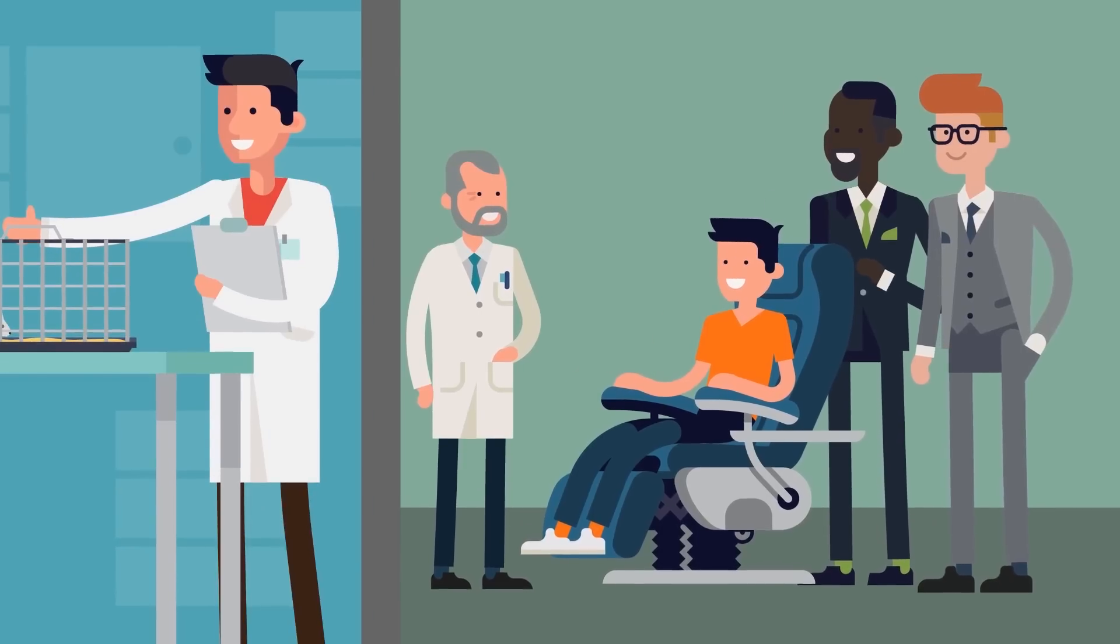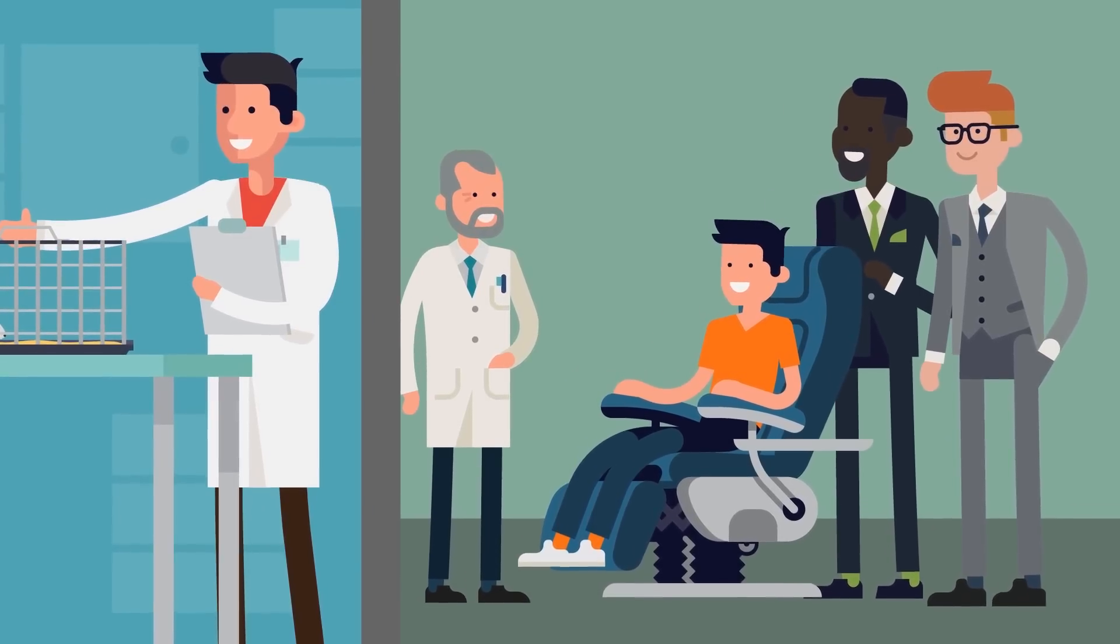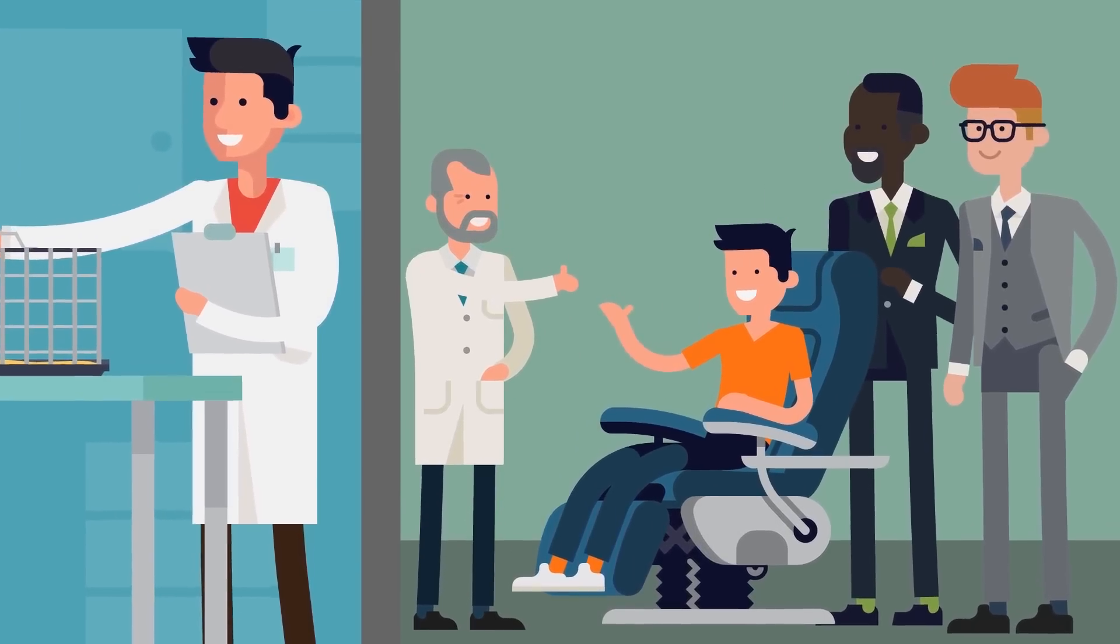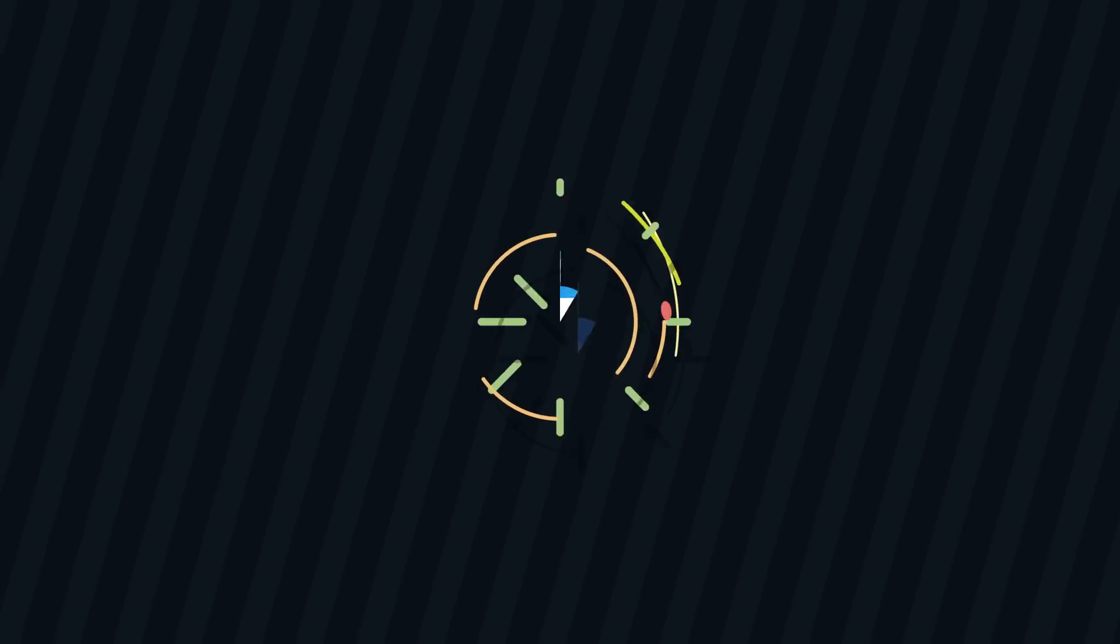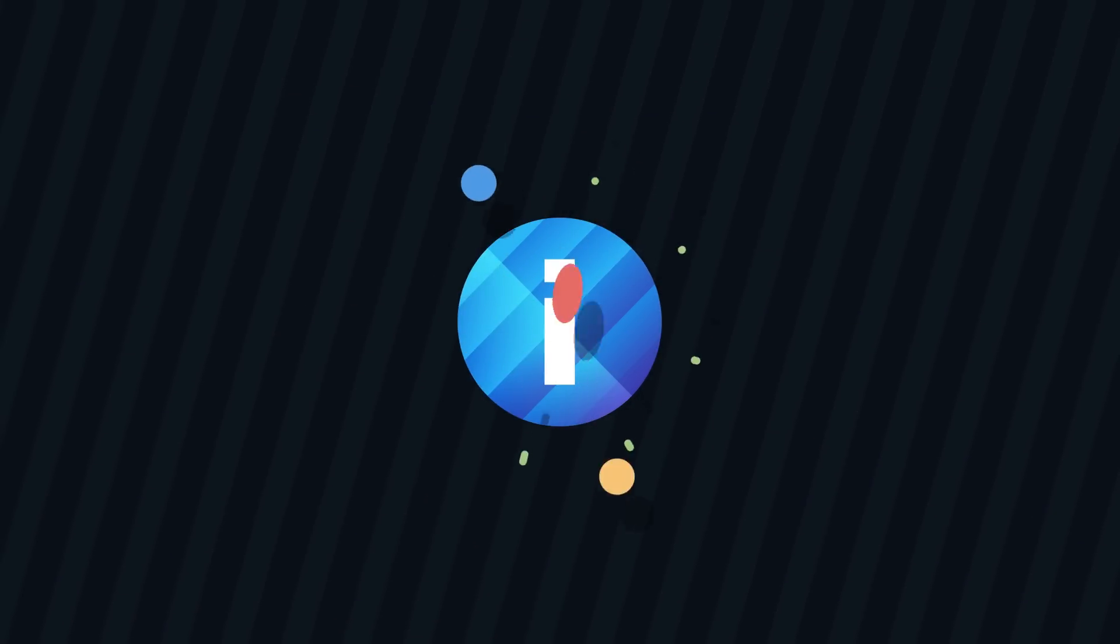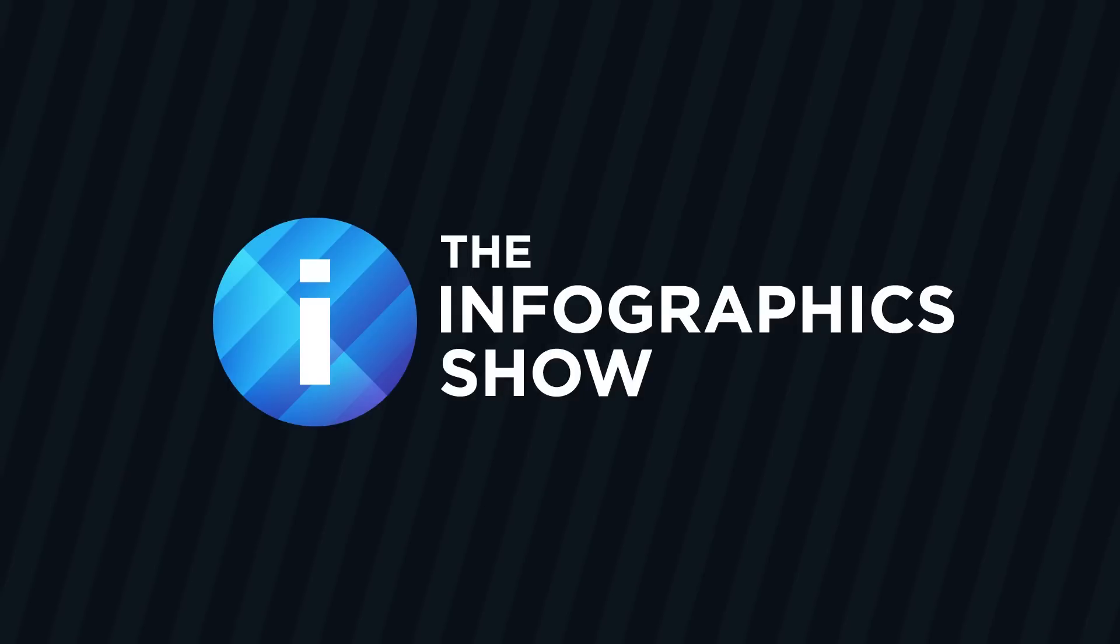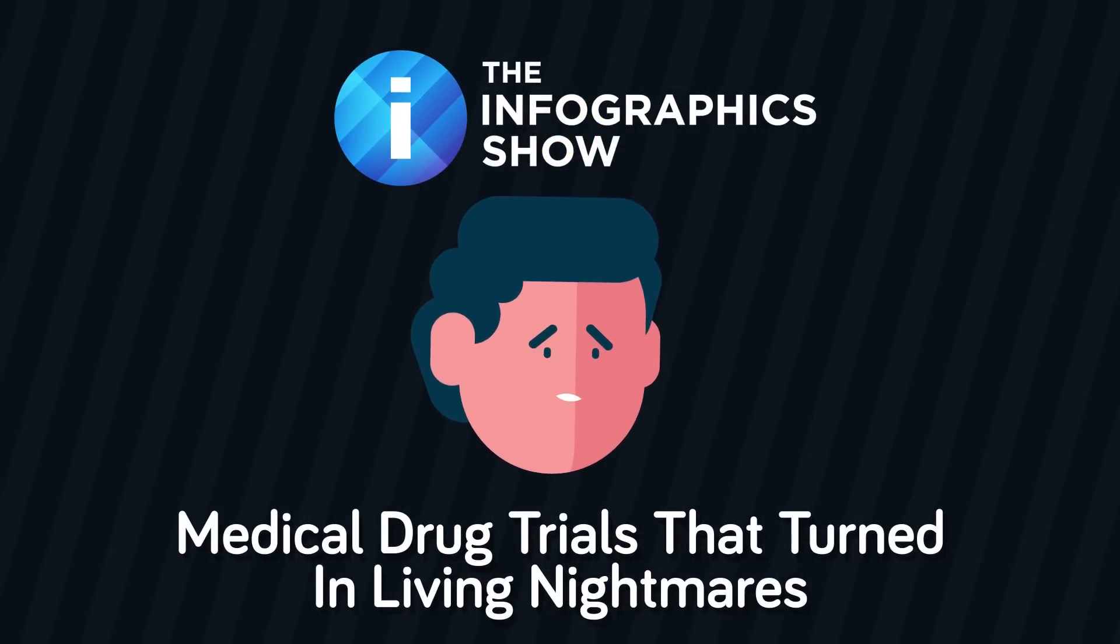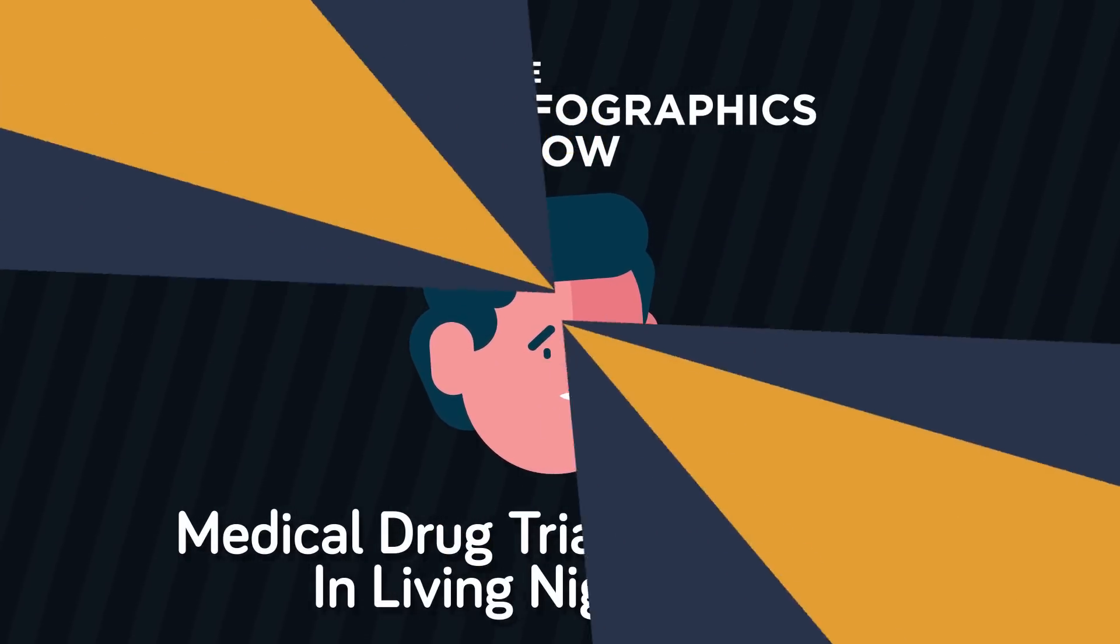These trials might include healthy people or sick people. They can test a drug's effectiveness, side effects, or how the body absorbs it - bioavailability. The drug should already be safe, but there have been times that things went horribly wrong. That's what we'll talk about today in this episode of The Infographics Show - Medical Drug Trials That Turned Into Living Nightmares.